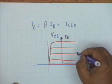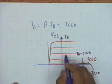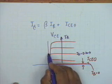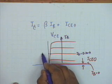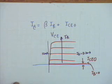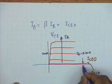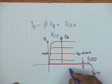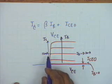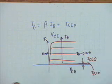Suppose I_B equals 0.1 milliampere for a particular curve, and when that curve is extended, it meets the I_C axis at about 10 milliampere. If you ignore ICEO, the collector current would be 10 mA divided by 0.1 mA, giving β approximately equal to 100.